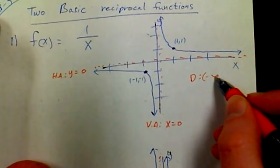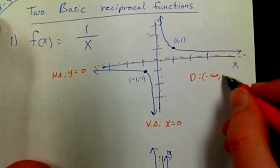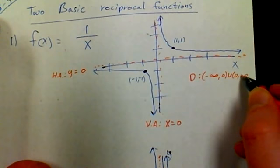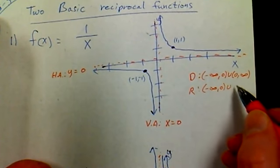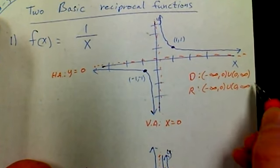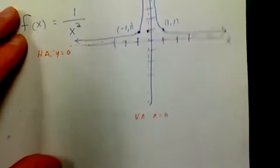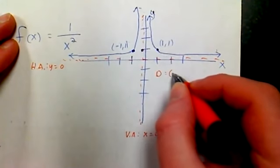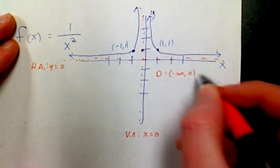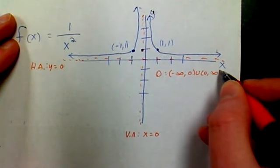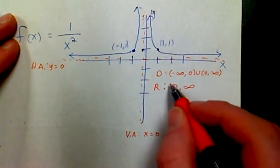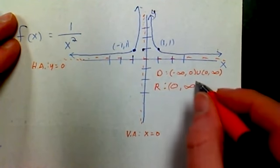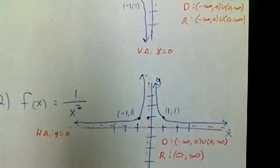I guess one thing I should probably include with these is domain and range. So the domain on the first one is negative infinity to 0, not including 0, union 0 to infinity. The range is actually the same thing: negative infinity to 0 union 0 to infinity. Down here it's a little different. Our domain is the same: negative infinity to 0 union 0 to infinity. Our range is only 0 to infinity but of course not including 0.